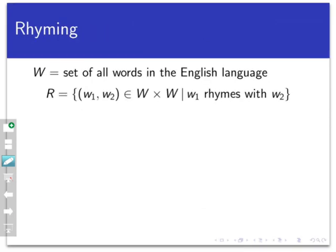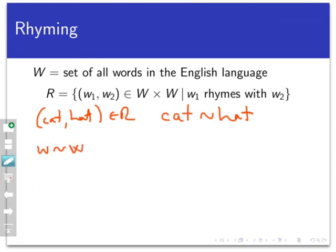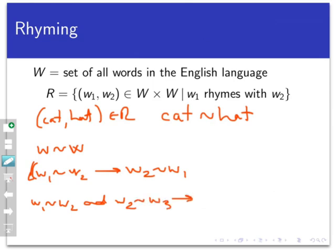Here's another example. Let w be the set of all words in the English language, and place a relation r on w by saying that two words w1 and w2 belong to the relation if and only if w1 rhymes with w2. For example, the pair cat, hat is in r — or as we might now notate, cat tilde hat. This is reflexive because every word rhymes with itself, symmetric because if word 1 rhymes with word 2, then word 2 rhymes with word 1, and transitive because if word 1 rhymes with word 2 and word 2 rhymes with word 3, then word 1 rhymes with word 3. For example, cat rhymes with hat, hat rhymes with bat, and cat rhymes with bat.